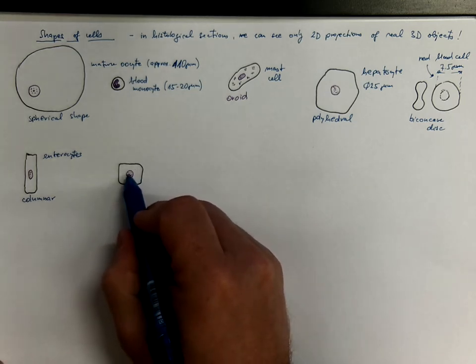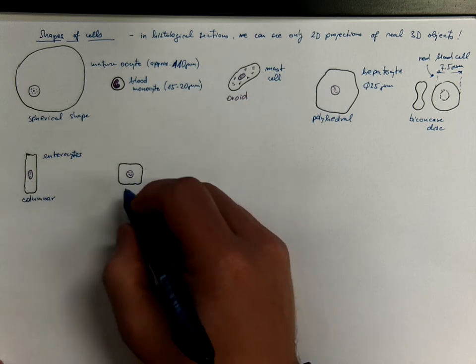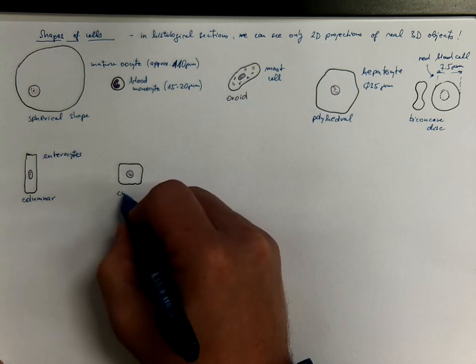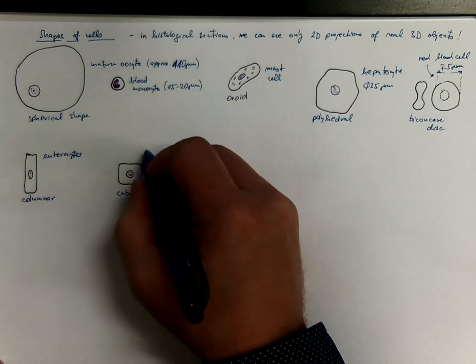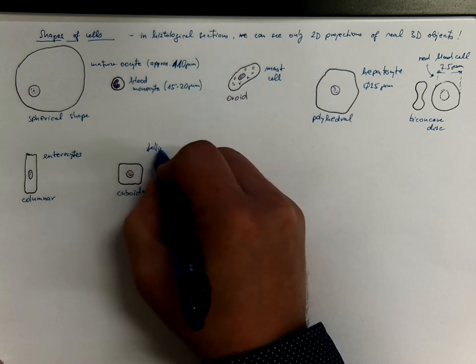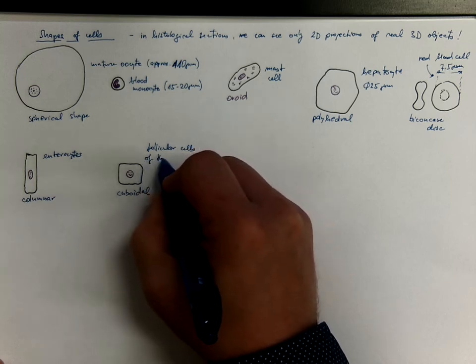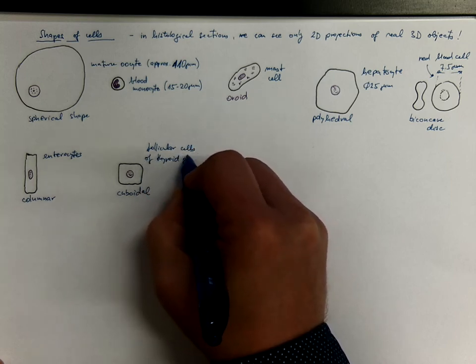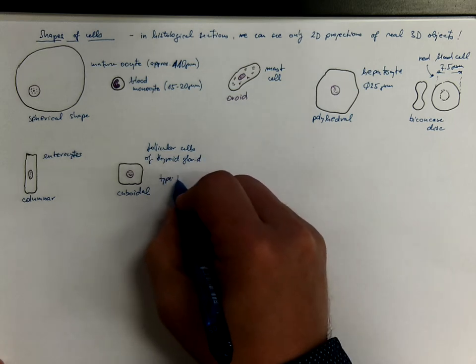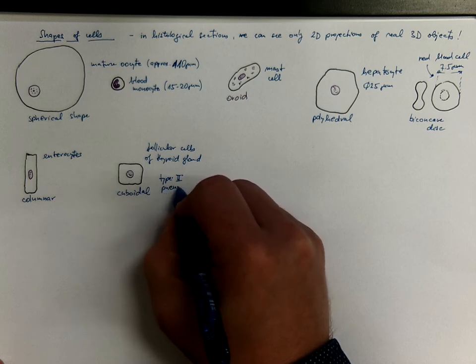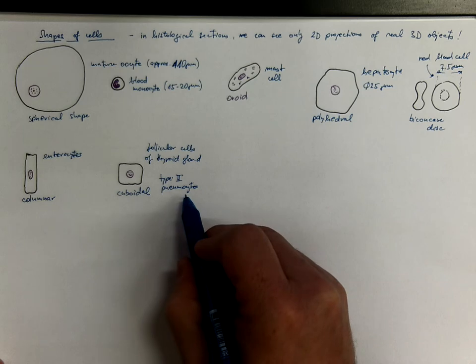See how the shape of the nucleus also corresponds somehow with the shape of the cell. So this would be cuboidal. And a good example would be follicular cells of the thyroid gland or type 2 pneumocytes aligning the lung alveoli.